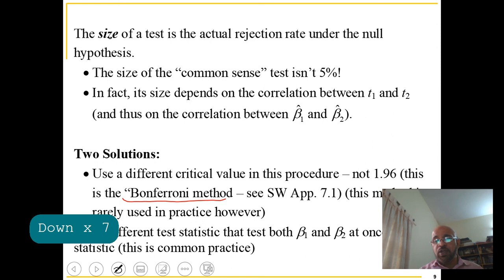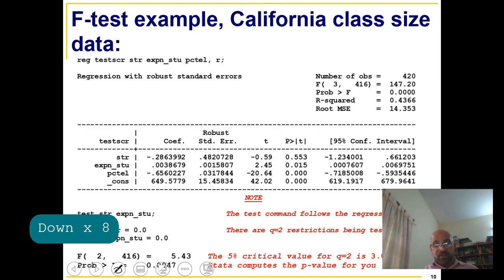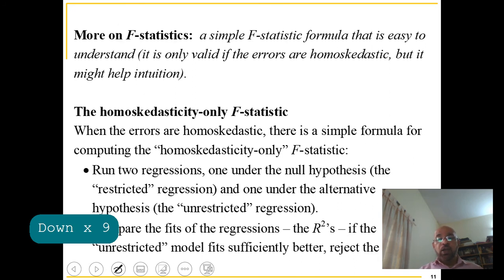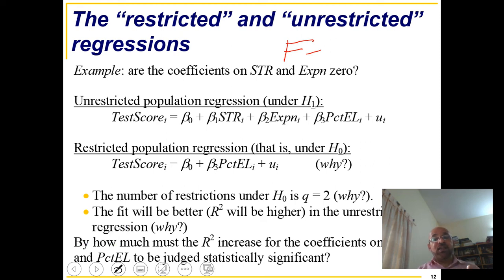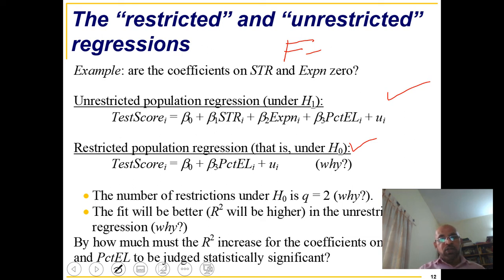There are two solutions: one is the Bonferroni method, which we are not using, and the other — most commonly used — is the F-test. In the F-test there are two versions: the homoscedastic-only F-statistic and the heteroscedastic-robust F-statistic. First, we define the unrestricted model: the larger model where all variables are included, which is the superintendent's claim.